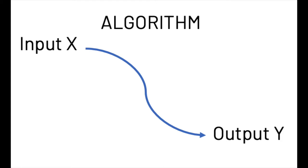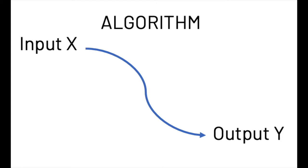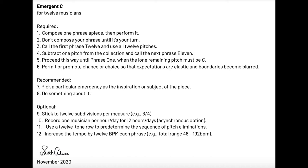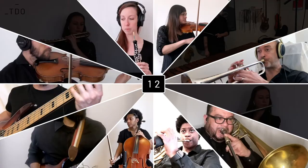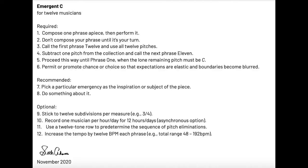You could also call it an algorithm — something where input X goes in one end and output Y comes out of the other. The point is to take the musical energy and creativity of 12 composer-performers, pass it through this filter, and let the result be whatever it is. For the remainder of this video, I'll talk about each of the 12 instructions and how 12 TDO musicians, myself and 11 others from around the U.S., interpreted them. I encourage you to interpret them however you see fit.